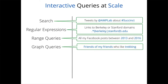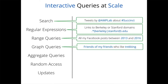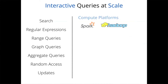You might also want to perform complex operations on graphs — for example, in a social network, finding all friends of your friends who enjoy tracking and analyzing that data. In addition, there are seemingly simple operations like aggregate queries, random accesses, and updates which become challenging given the scale of the data you're operating on.